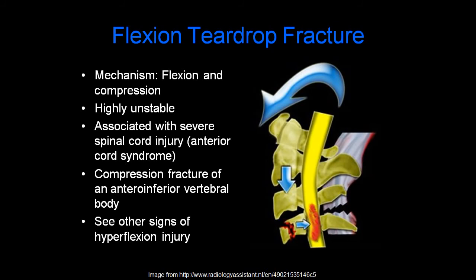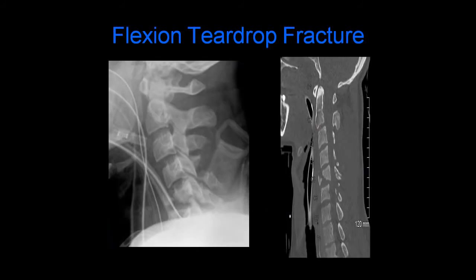A flexion teardrop fracture is a serious type of injury which occurs with flexion and compression. This is highly unstable and is associated with severe spinal cord injury, most often the anterior cord syndrome. It is a compression fracture of the anteroinferior vertebral body. You also see other signs of hyperflexion injury. Here is an example showing a kyphotic deformity and a compression fracture of the anteroinferior aspect of C5, with the corresponding CT scan image.